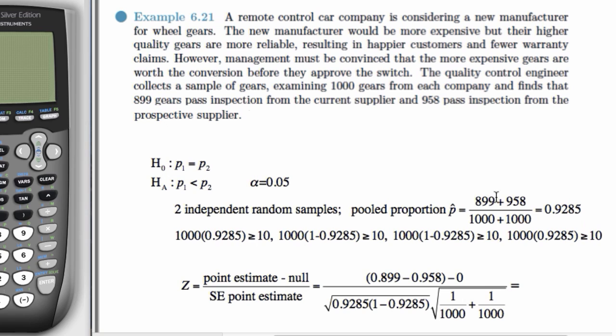And we do that by adding the total number of yeses over the total sample size. And here, we get 0.9285. So, this quantity we're going to use when we check our conditions, and we're also going to use it in the SE formula.